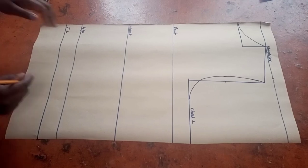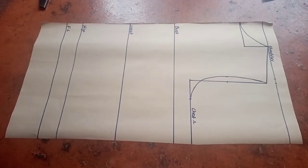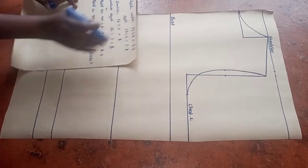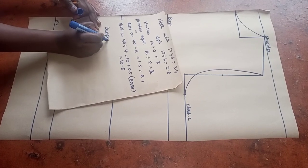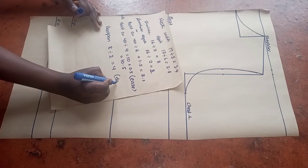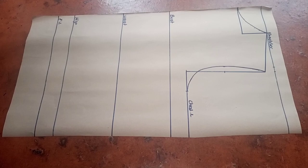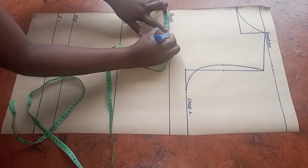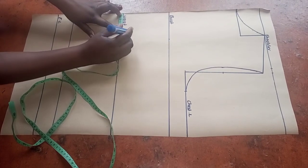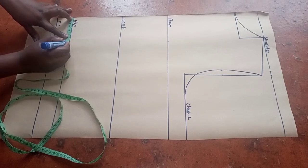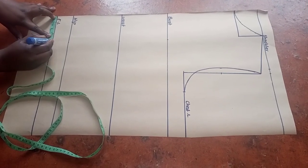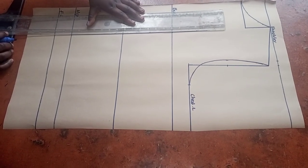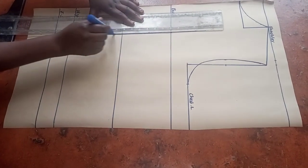We'll go to the bust, and here we're going to get our nipple-to-nipple measurement, or our bust span. Our bust span was 8 divided by 2, which gives me 4 — this is for the dart. So I'll go on my bust line and mark the 4 inches, and I'll do this on all the lines. Then I can draw a straight line to attach all the points.